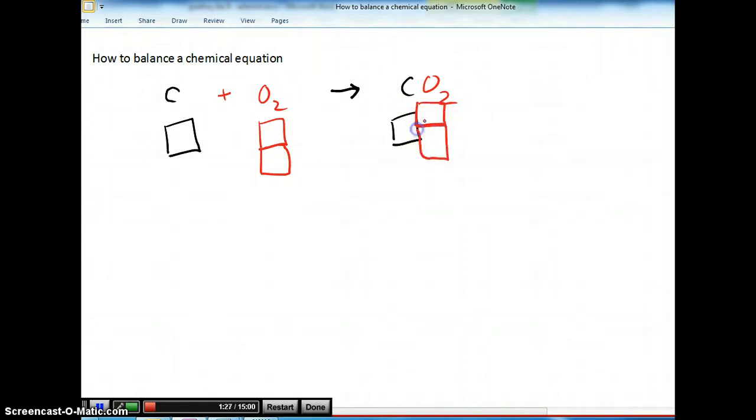Now the difference between the before and the after is that this is all clumped together. These are separate. Now, there's one black box, two red box, one black box, two red box. So it looks like we're good here.